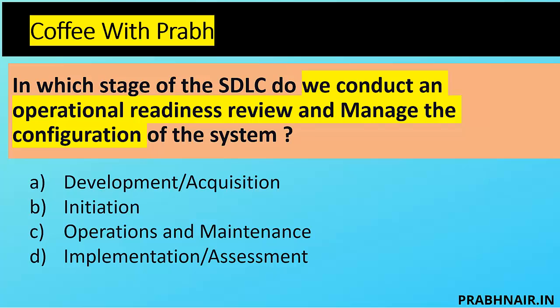The only option left is C — Operation and Maintenance. During this stage, when the application is in production, any changes must go through a change management process, any configuration updates must go through a configuration management process, and any application review requires reviewing documentation first. Operational readiness review and configuration management are checked before changes are applied in production. That is why the answer is C — Operation and Maintenance.